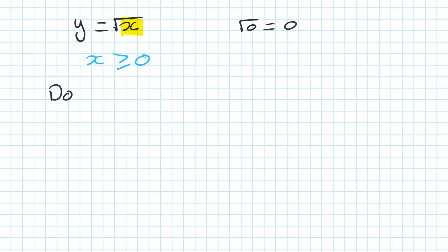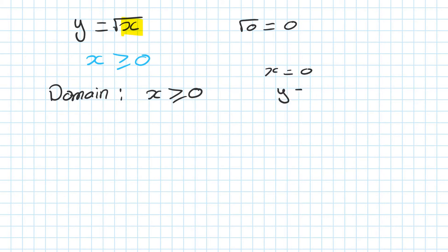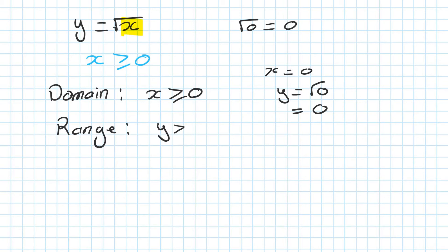So I'll write it down here. Domain is x is greater or equal to 0. Then because x equal to 0 is the smallest number, if x is 0, y must be square root of 0, which is 0. So 0 is the smallest value for y as well. So range is y is greater or equal to 0.